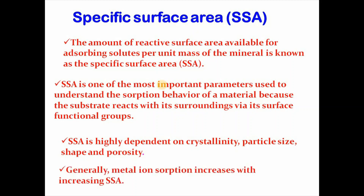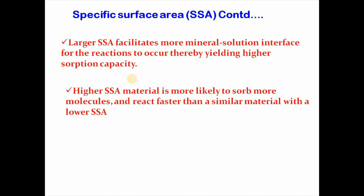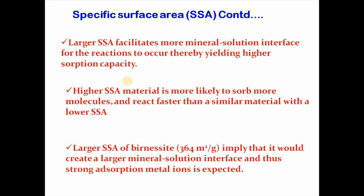Generally, metal ion adsorption increases with increasing surface area. Greater area facilitates more mineral-solution interface for the reaction to occur, thereby yielding higher adsorption capacity. A higher specific surface area mineral is more likely to adsorb more molecules and react faster than a similar material with a lower specific surface area. For example, a larger surface area of 364 meters squared per gram implies that it will create a larger mineral-solution interface and thus strong adsorption of metal ions is expected.